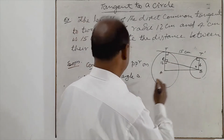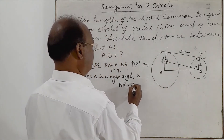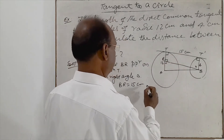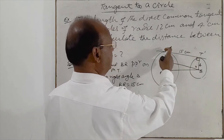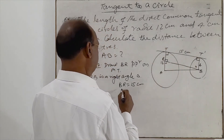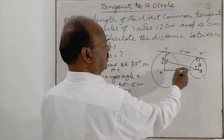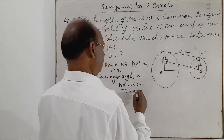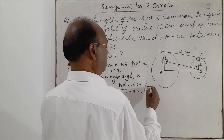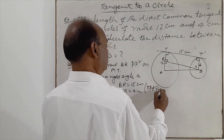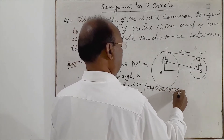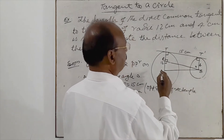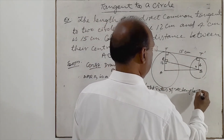Therefore we can write BR is 15 centimeter, since BR and TT' are opposite sides of rectangle RBT'T. Similarly, TR is opposite to the side T'T, so TR will also be 4 centimeter. These are opposite sides of rectangle RBT'T, and in a rectangle the length of opposite sides are equal.